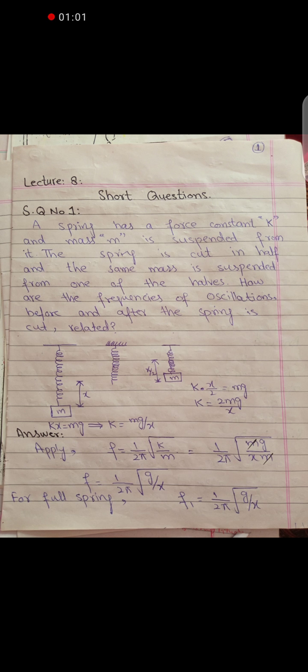The frequency is 1 over 2π under root K by M. That is 1 over 2π under root Mg over X divided by M, which equals 1 over 2π under root g by X. For the half spring, we replace X with X by 2. This becomes 2g over X. So f2 is equal to under root 2 times f1.